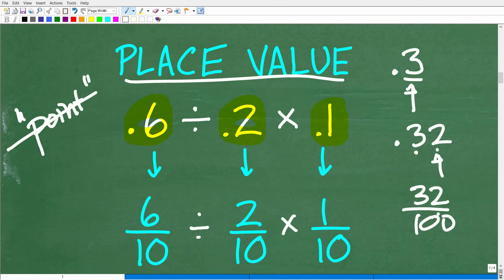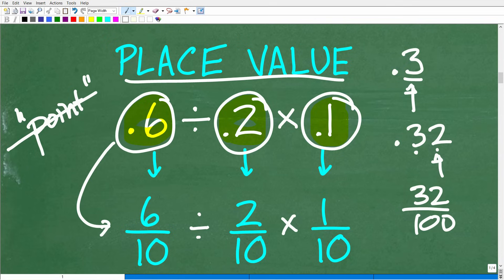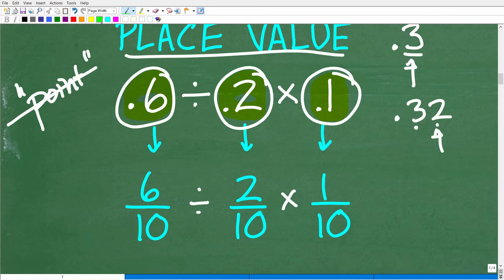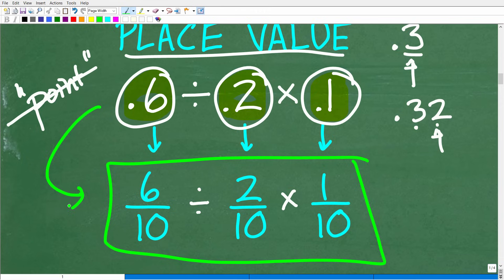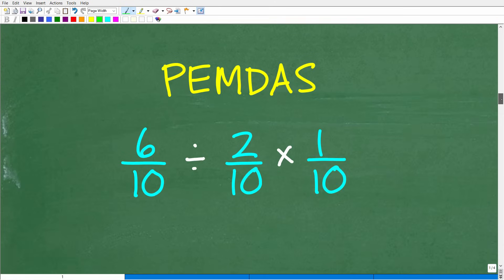What we want to do is write each of these decimals as fractions using their place value descriptions. 0.6 we can think of as 6/10, 0.2 as 2/10, and 0.1 as 1/10. You can do hand calculations with decimals, but that's probably more involved than most people want. The easiest way, in my opinion, is to convert each value to fractions using place value. So the equivalent problem is 6/10 divided by 2/10 times 1/10.